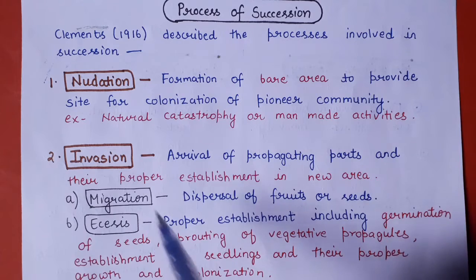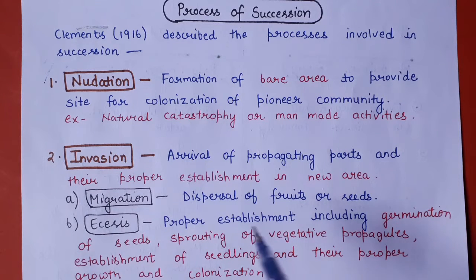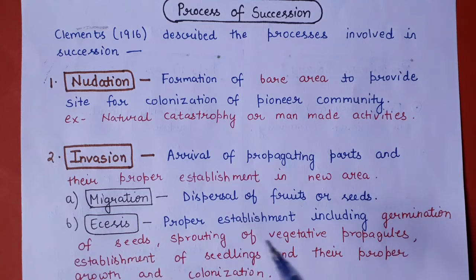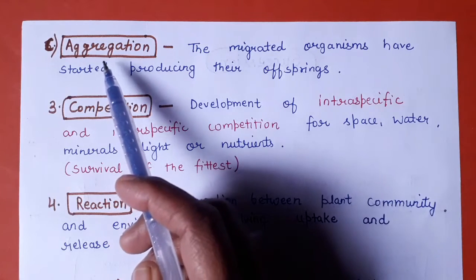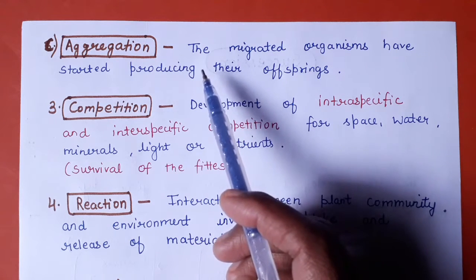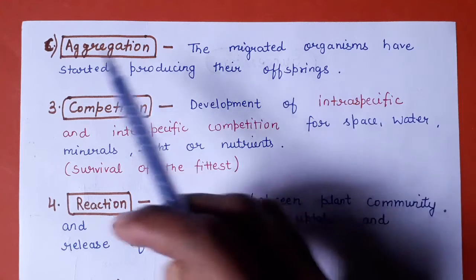The first sub-step of invasion is migration, which involves the dispersion of fruits and seeds from the nearby area. The second is ecesis, which involves proper establishment including germination of seeds, sprouting of vegetative propagules, establishment of seedlings, and their proper growth and colonization in that barren area. The third sub-step of invasion is aggregation — as the plant grows, it reproduces and produces offspring, leading to aggregation.